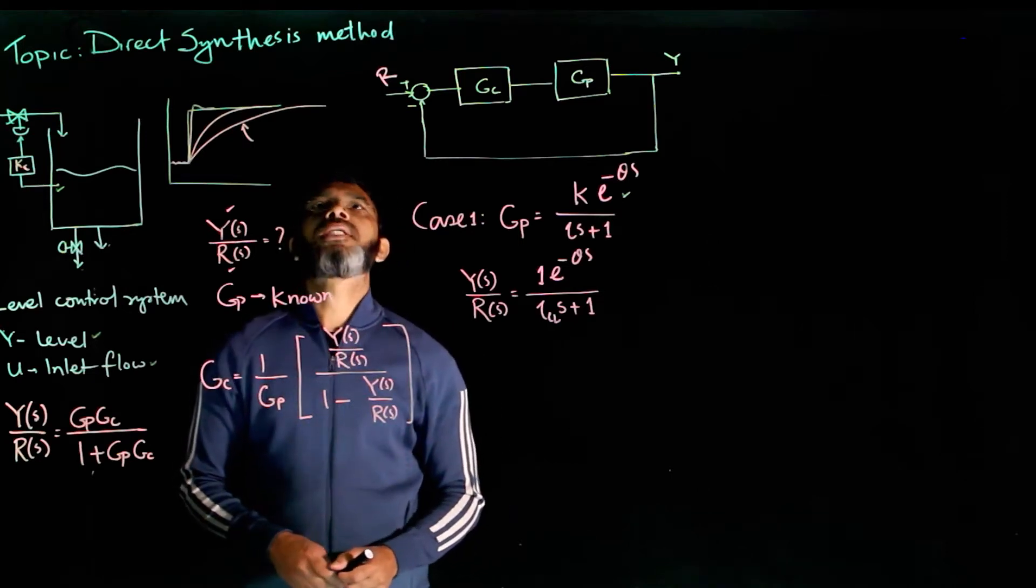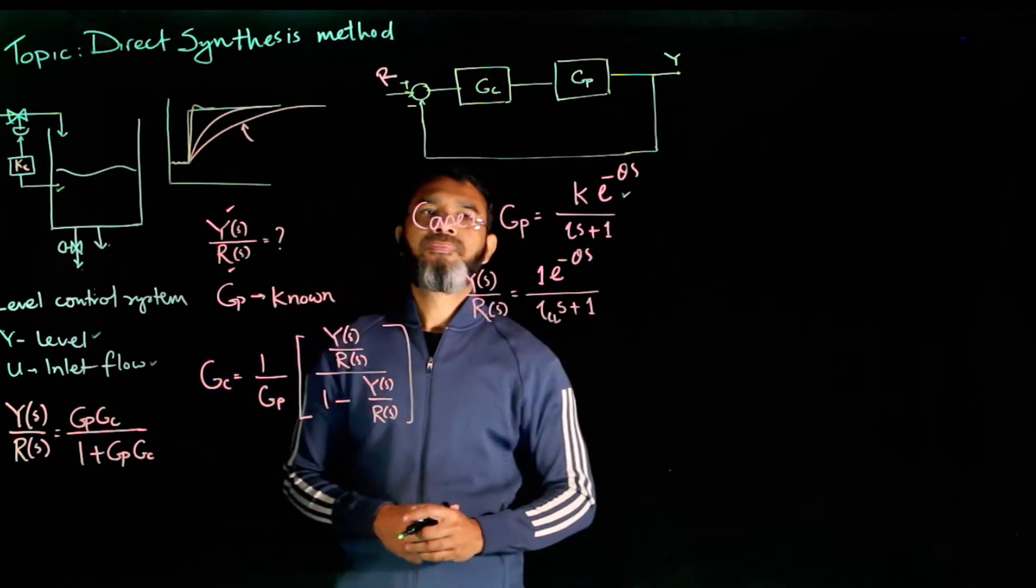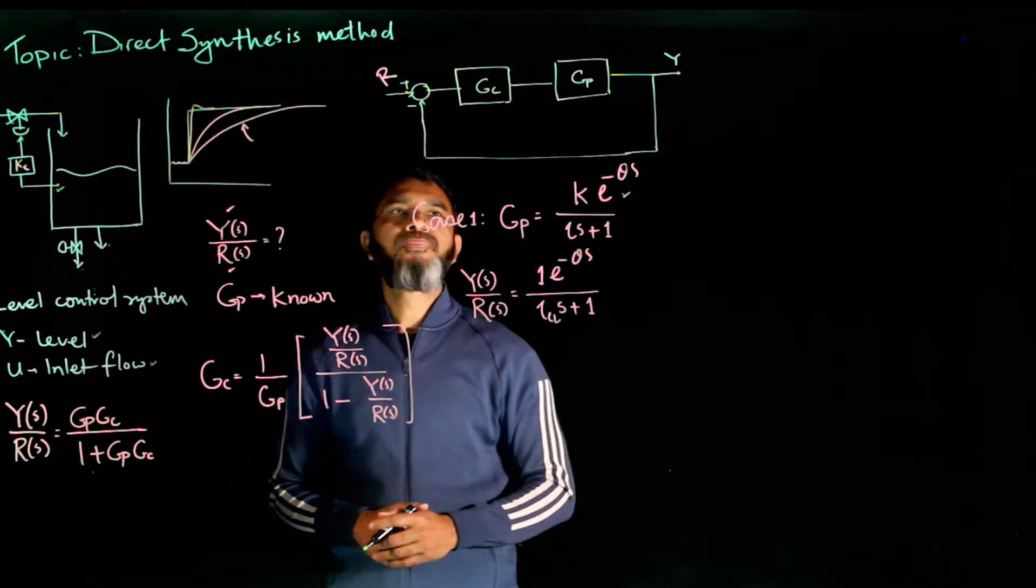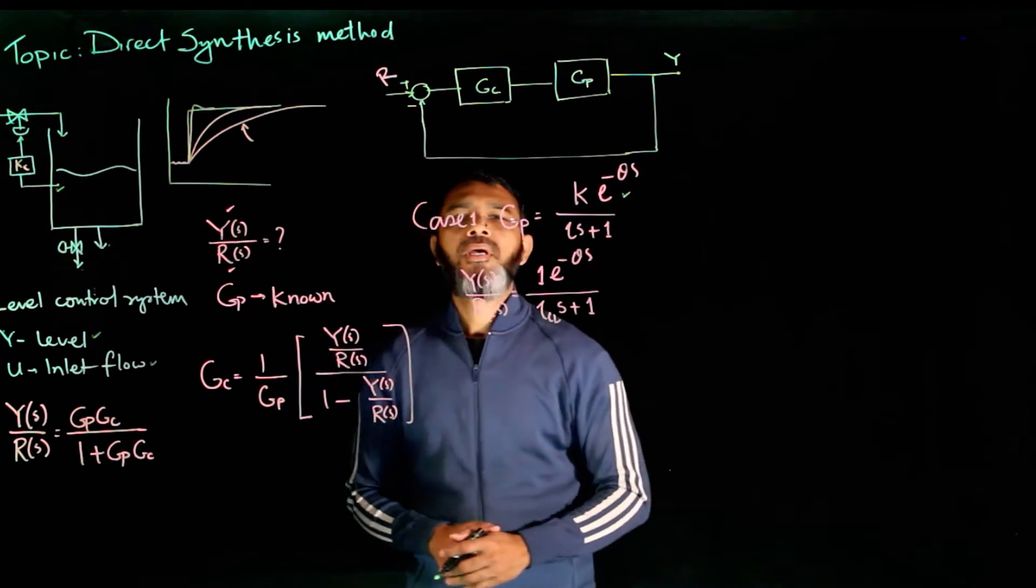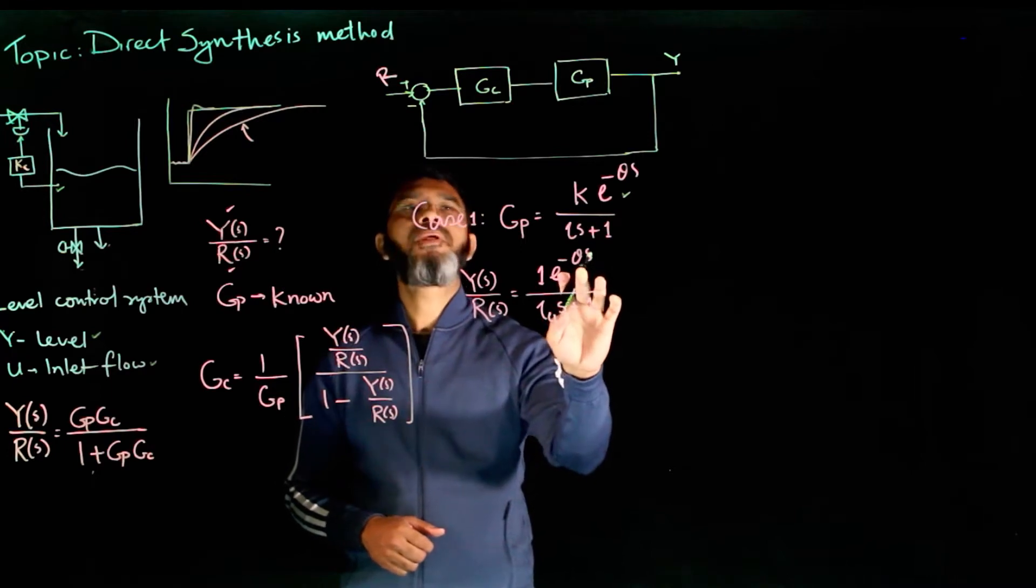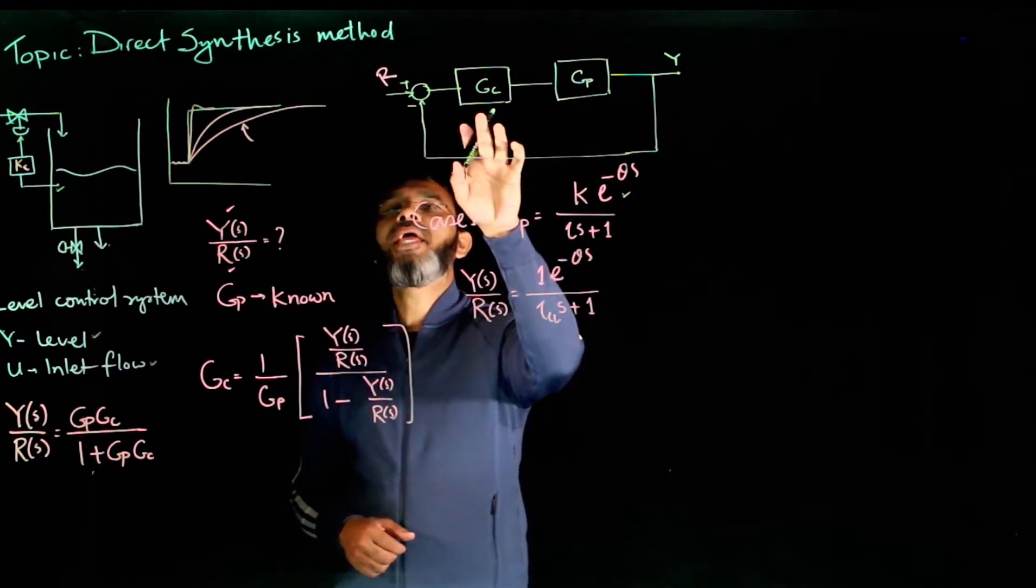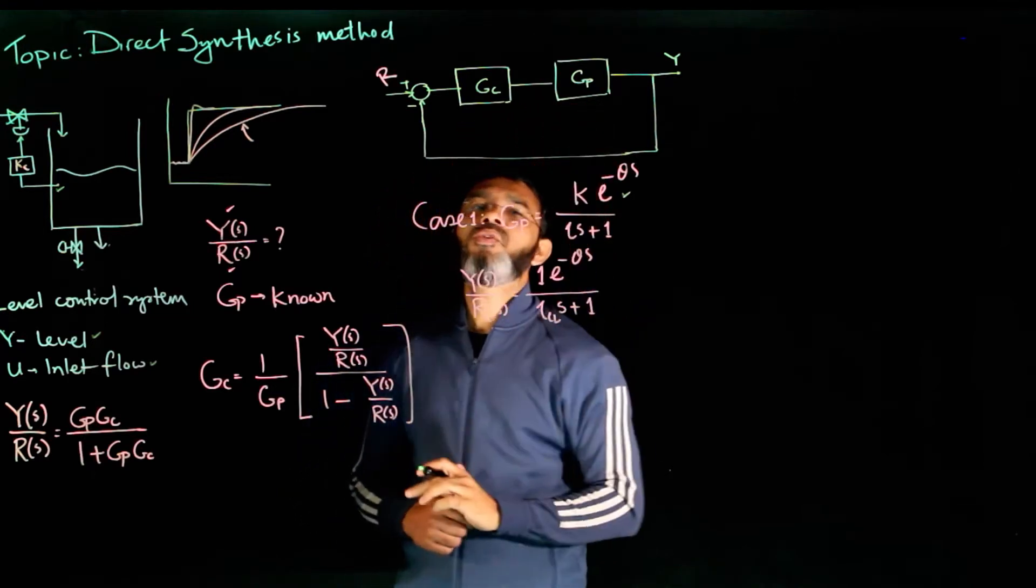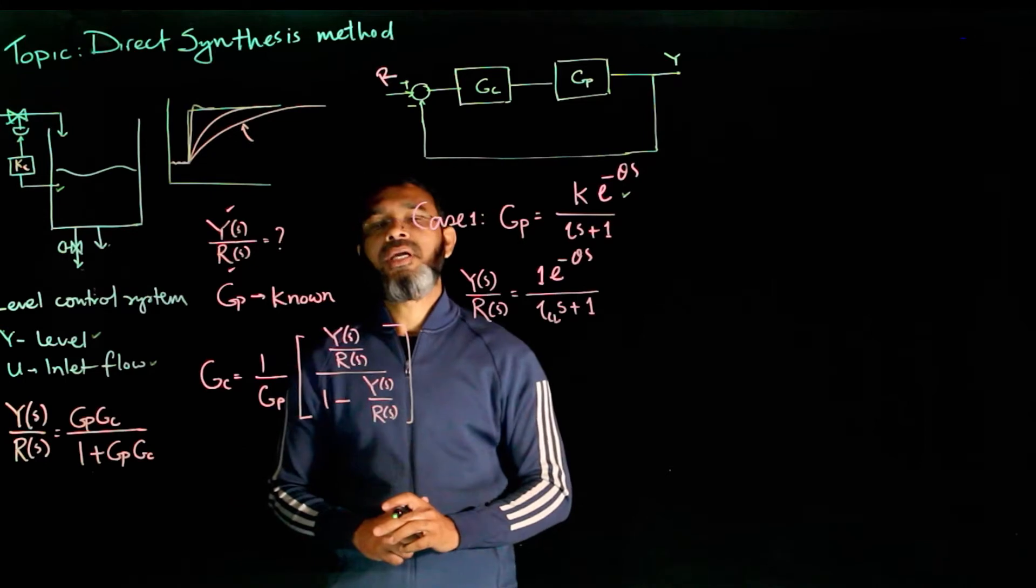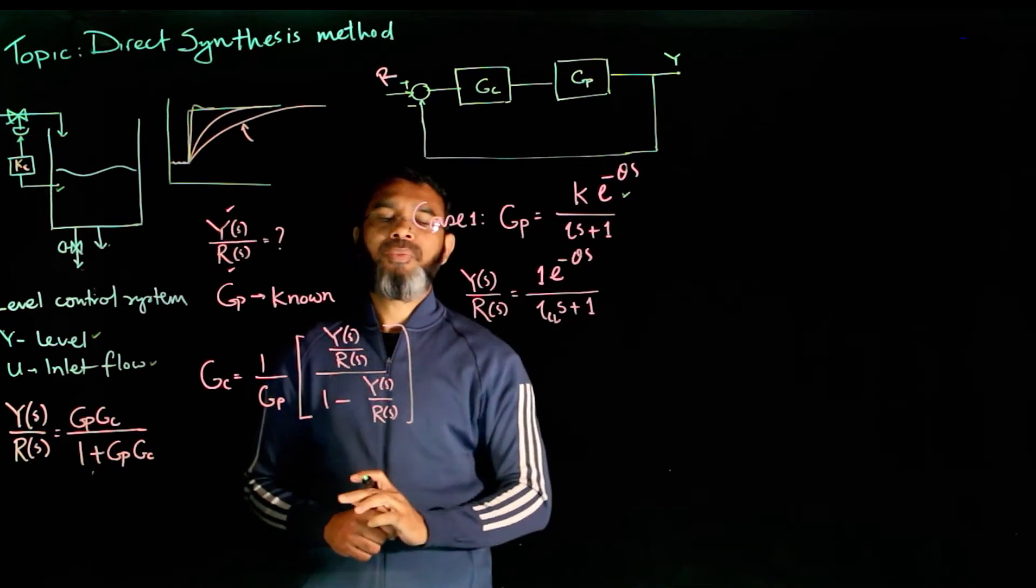Now let's look at the direct synthesis method when the process has a delay term. For this case, the process is first order with a time delay. When there is a delay term, the closed loop response should also have the time delay, simply because no matter what the way the controller is manipulating, the delay between input and output will be there. So you need to have the same delay for the closed loop response.